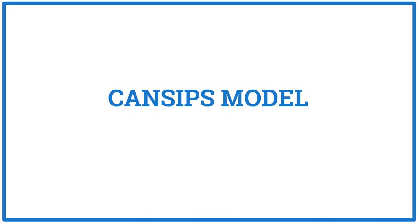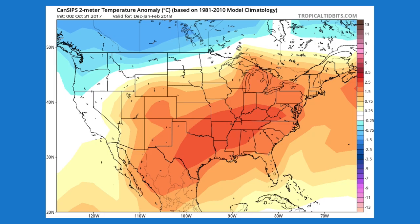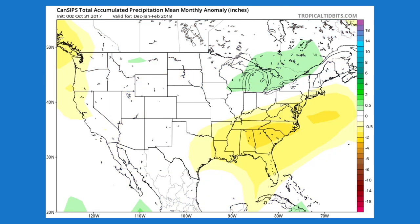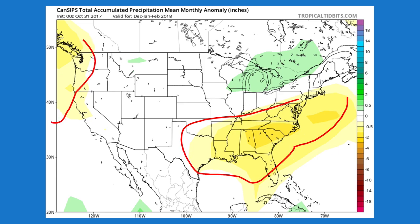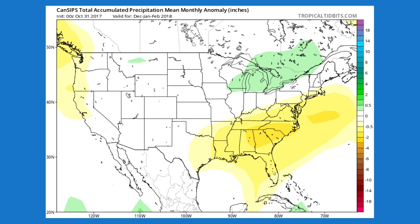The CANSIPS model kind of looks like the CFS, with warmer than average temperatures for much of the southern three-fourths of the United States and below average temperatures for the northern United States. Precipitation-wise, it's a little different — it has below average precipitation in a couple of areas, a little above average in others, and above average in the Great Lakes region.